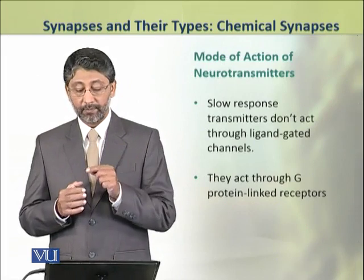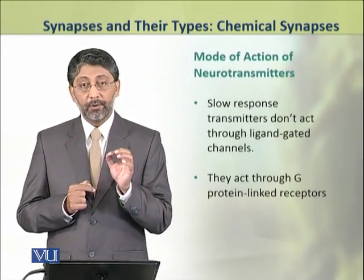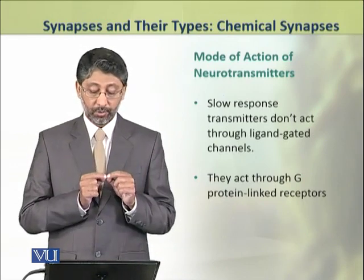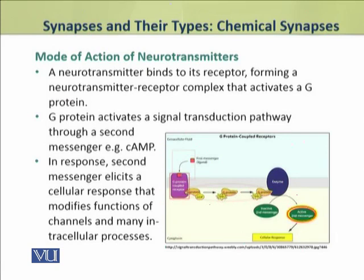The mechanism of action of neurotransmitters involved in slow chemical transmission is different from fast synapses. The slow response transmitters do not act through ligand-gated channels but act through G protein-linked receptors. A neurotransmitter binds to its receptor, forming a neurotransmitter-receptor complex that activates a G protein. The G protein then activates a signal transduction pathway involving a second messenger, for example cyclic AMP (cAMP). The second messenger elicits a cellular response that modifies the functions of channels and many intracellular processes.